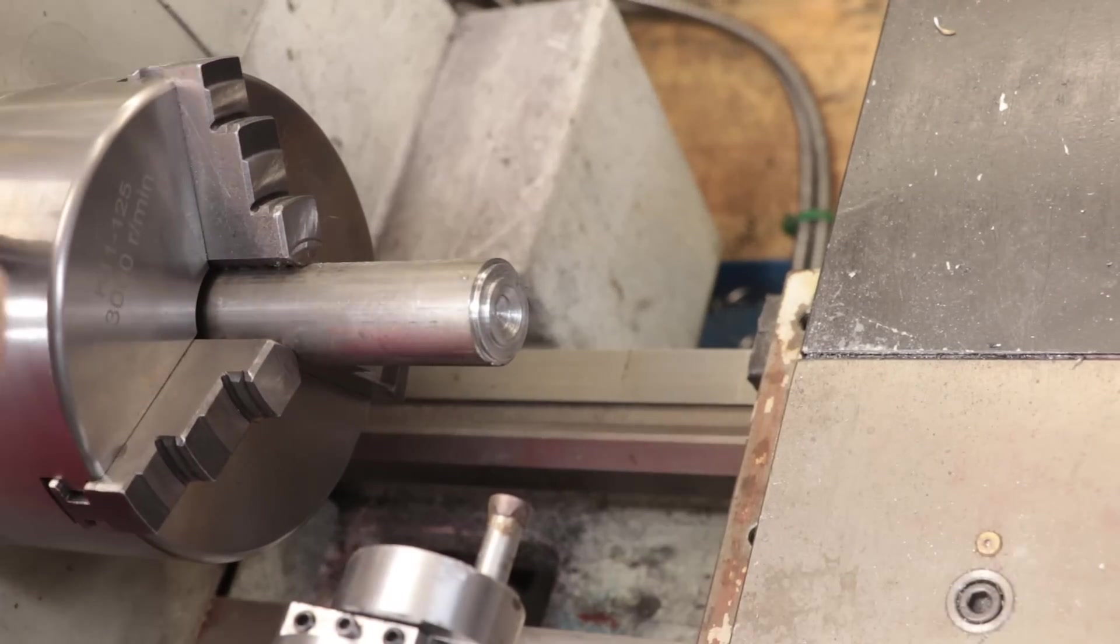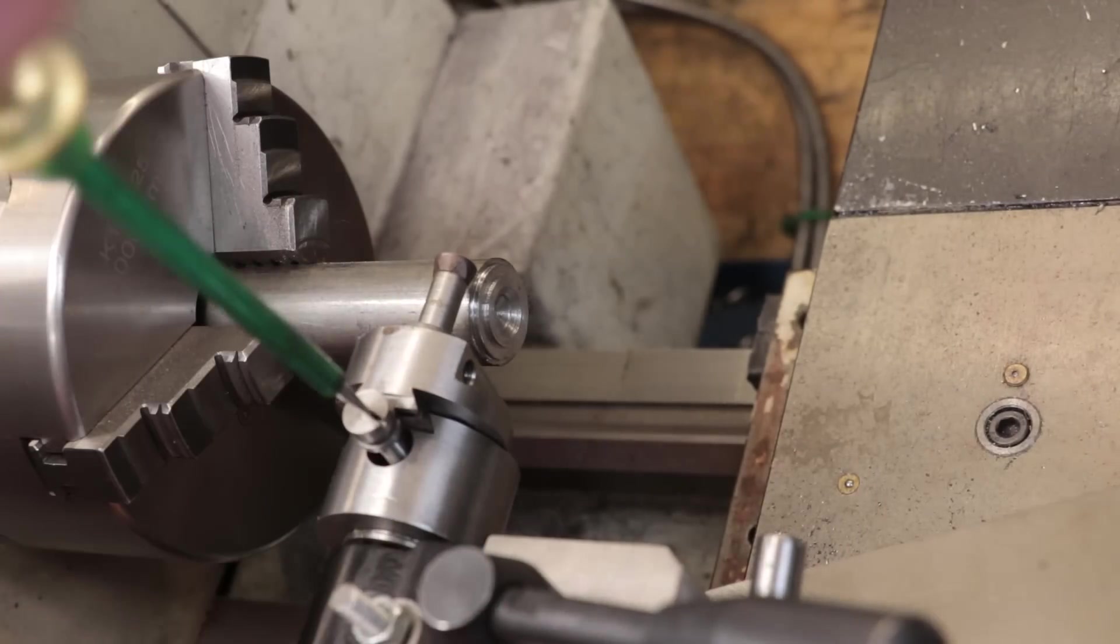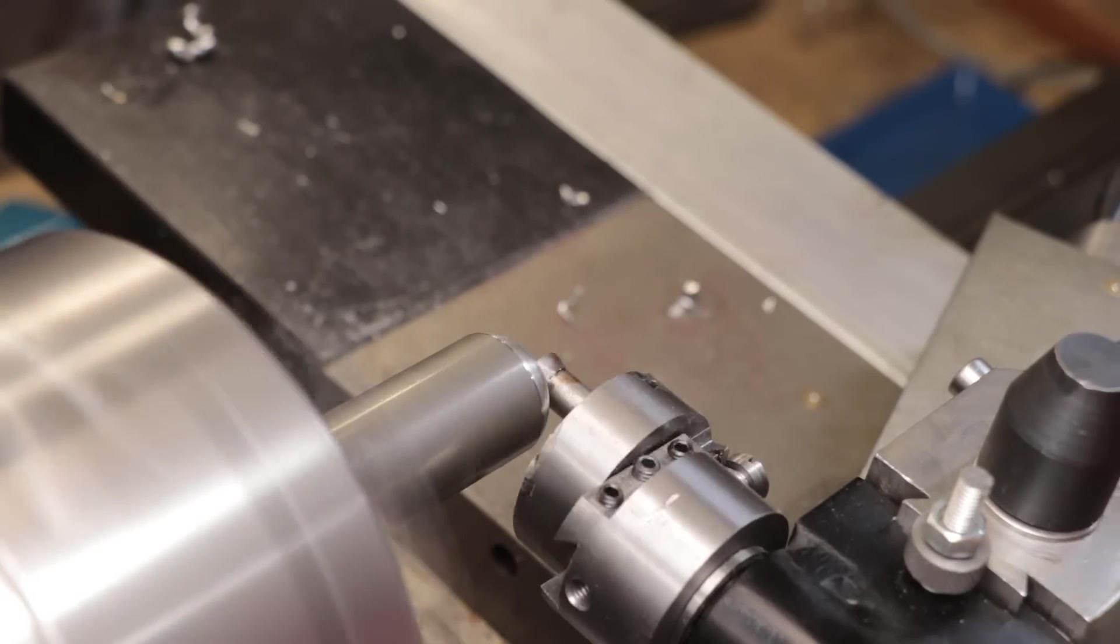First step was to make the ball. I got my ball turner and then I turned down a ball from some 1045 rod stock. I'm going to make it slightly oversized so I can then sand it down to the correct size.